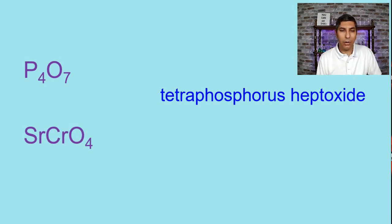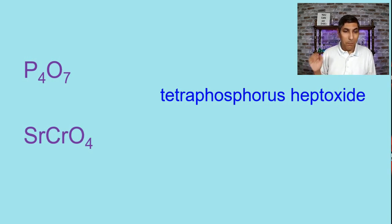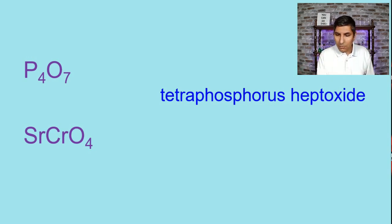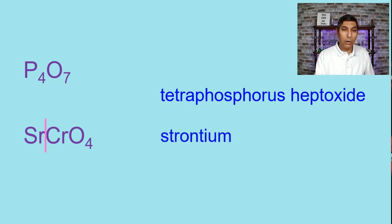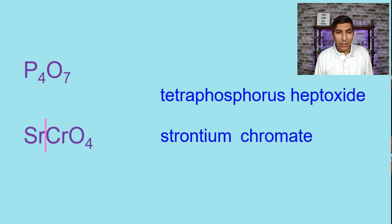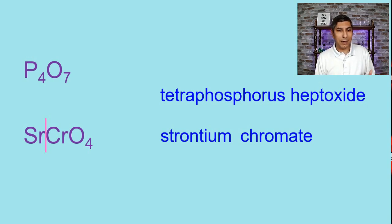Let's try SrCrO4. This compound is ionic — we have a metal and an anion. Split it down the middle right after the strontium. Sr is strontium, and CrO4 is the polyatomic ion chromate, right off the ion chart. So the answer is strontium chromate. Strontium is not a transition metal, so it doesn't need any Roman numeral in parentheses — strontium is always plus 2.